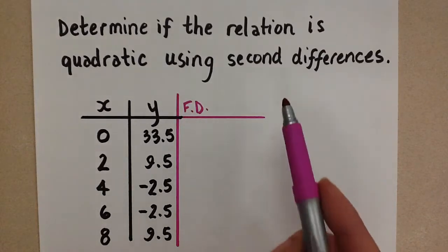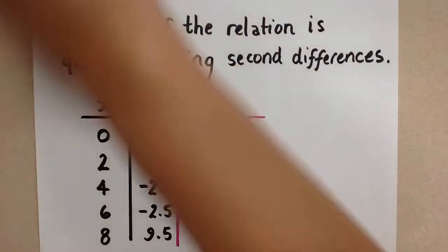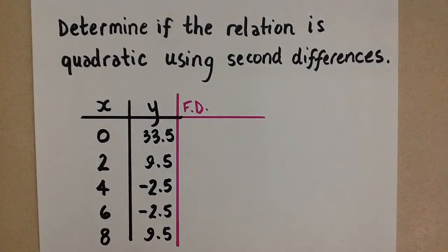So to find second differences, we have to do the first differences first. This is from our work with linear relations. If we recall, we did first differences to find if a relation is linear or not.